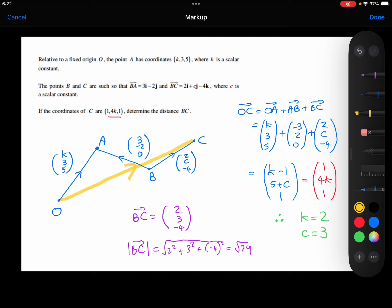So OC is going to be the same thing as OA plus AB plus BC. OA, that's the (k, 3, 5). AB, that's going to be (-3, 2, 0), because we're going in the opposite direction there. And then BC is the (2, c, -4).